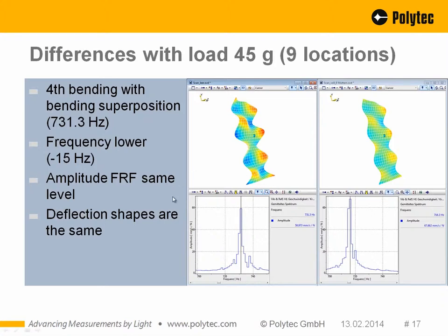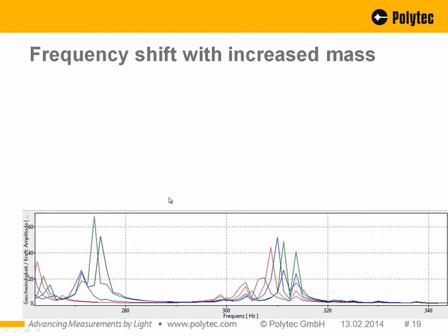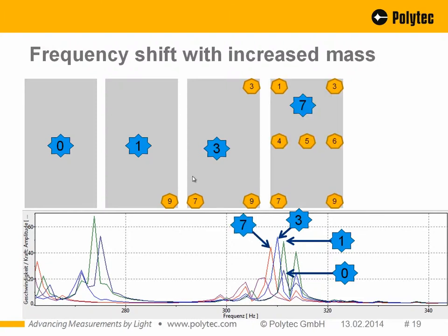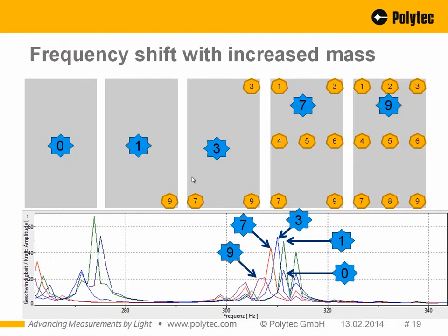If you look at a specific frequency and examine resonance peaks, at 311 Hz there is a clear resonance peak without mass. Adding just one mass produces a change in amplitude. With three masses there is a shift in frequency and a change in amplitude. Adding more masses causes another frequency shift, and with all nine masses there is a significant shift in both frequency and amplitude.